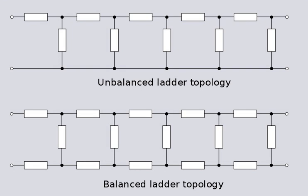Graph theory is the branch of mathematics dealing with graphs. In network analysis, graphs are used extensively to represent a network being analyzed. The graph of a network captures only certain aspects — those related to its connectivity, or in other words, its topology. This can be a useful representation and generalization of a network because many network equations are invariant across networks with the same topology. This includes equations derived from Kirchhoff's Laws.